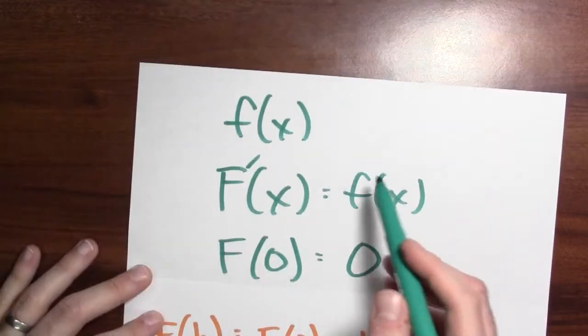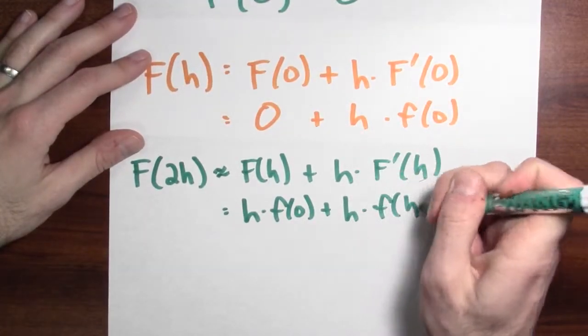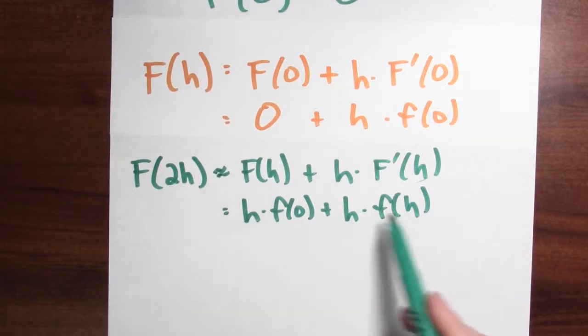I know big F's derivative is little f, so I can use that here. So this is just a little f at h. So this is an approximation for big F at 2h. And then I did it a third time.